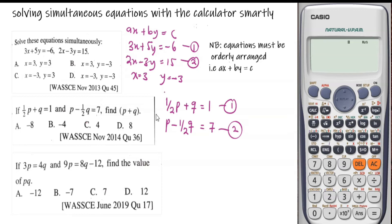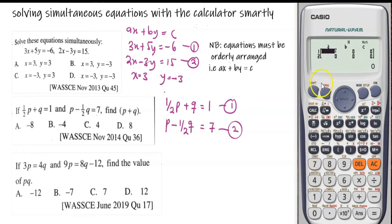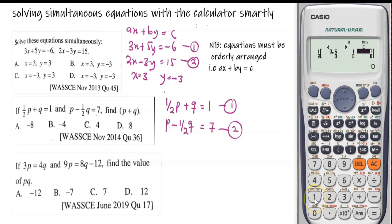All the variables are orderly arranged at one side of the equal to sign and the true constant is on the other side. Therefore, using our calculator: press Mode, select equations (number 5), then select number 1 for simultaneous equations in two variables. We key in the entries: the coefficient of p (a) is ½ — press equal; the coefficient of q (b) is 1 — press equal; the true constant is 1 — press equal.